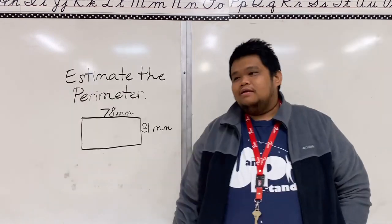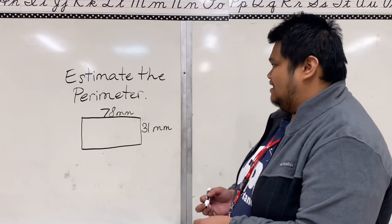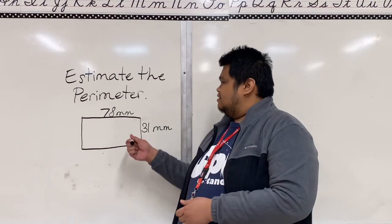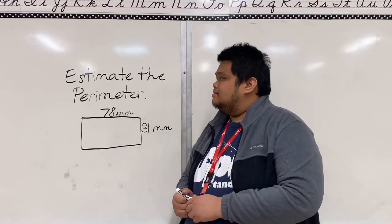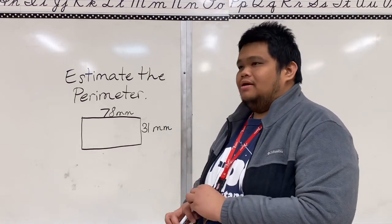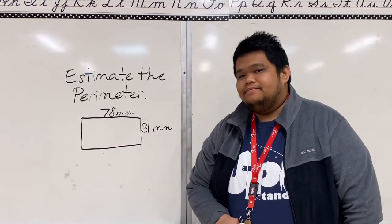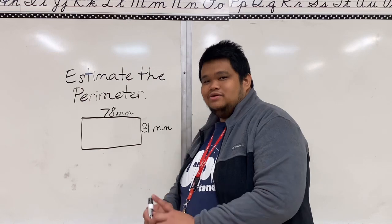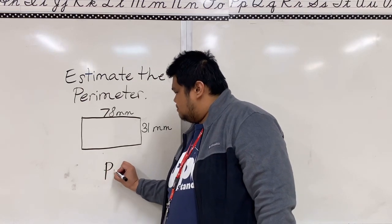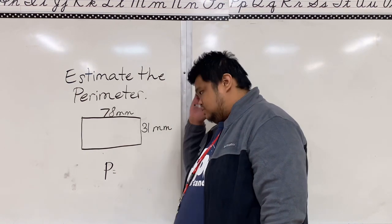All right class, let's move to the next level. Let me read the question. Estimate the perimeter of this rectangle. Now let me ask you, what is the formula to get the perimeter of a rectangle? You remember it? Yes, you're right. It is P equals to perimeter.